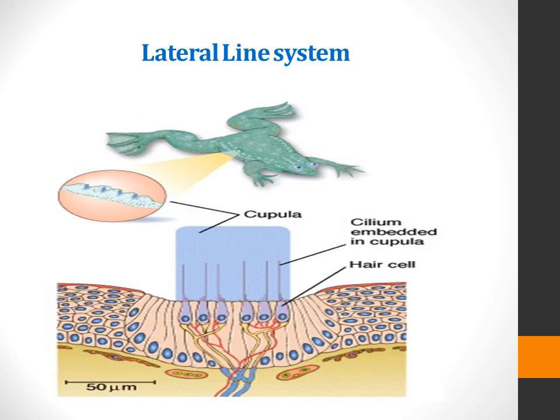The lateral line is a collection of sense organs distributed over the skin or in sub-epidermal canals of the head and body of aquatic lower vertebrates. They are found in cyclostomes, fishes, larval amphibians, aquatic adult urodele amphibians, and some aquatic anurans including the South African clawed frog Xenopus laevis. In frogs, as in all anuran amphibians whose adults have a mainly terrestrial existence, the lateral line system present in the larvae is lost at metamorphosis. Therefore, in the adult frog there is no lateral line system.